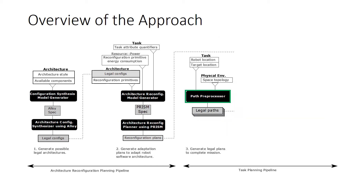This concludes the architecture reconfiguration pipeline. For the task planning pipeline, the first step is generating a set of candidate legal plans to complete the mission. In our scenario, these plans are sequences of legal actions to move between two arbitrary locations in the map — informally referred to as paths. The path preprocessor component receives the current and target robot locations from the task model and physical space topology from the environment model, then employs Dijkstra's algorithm to generate all legal paths.